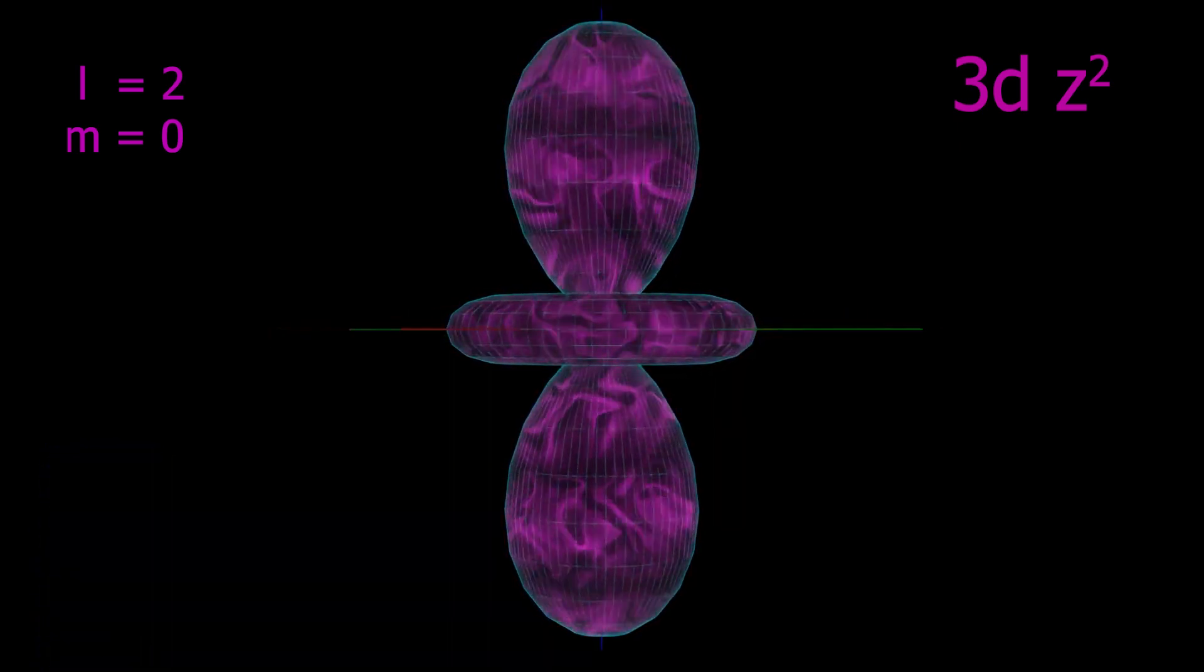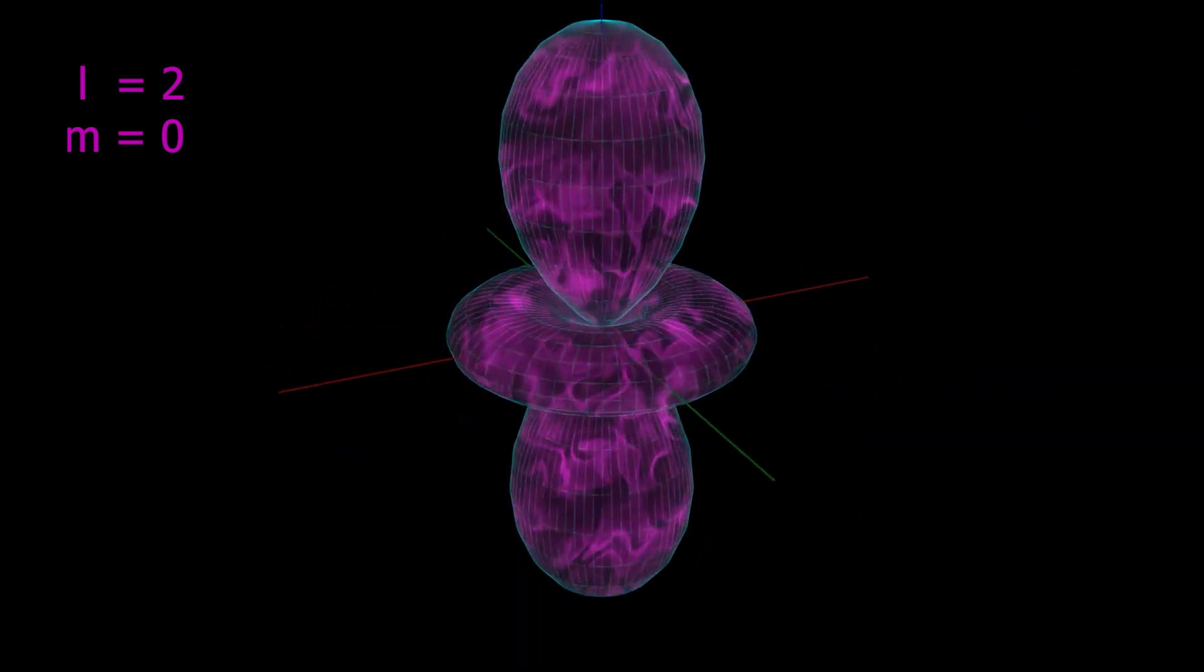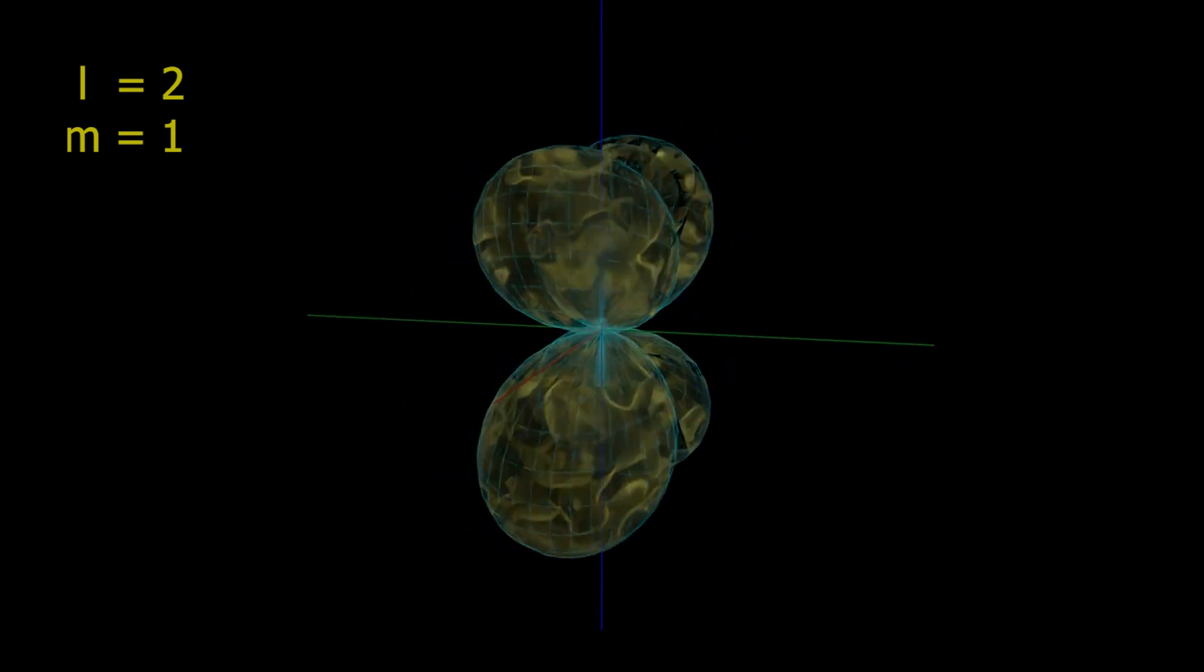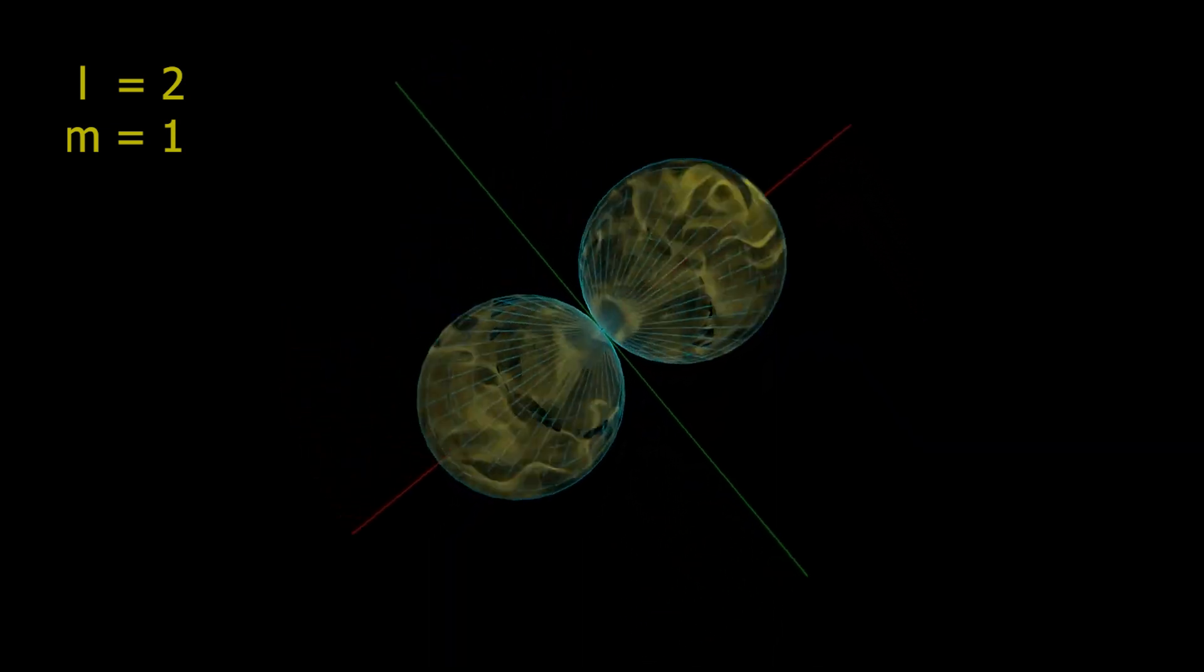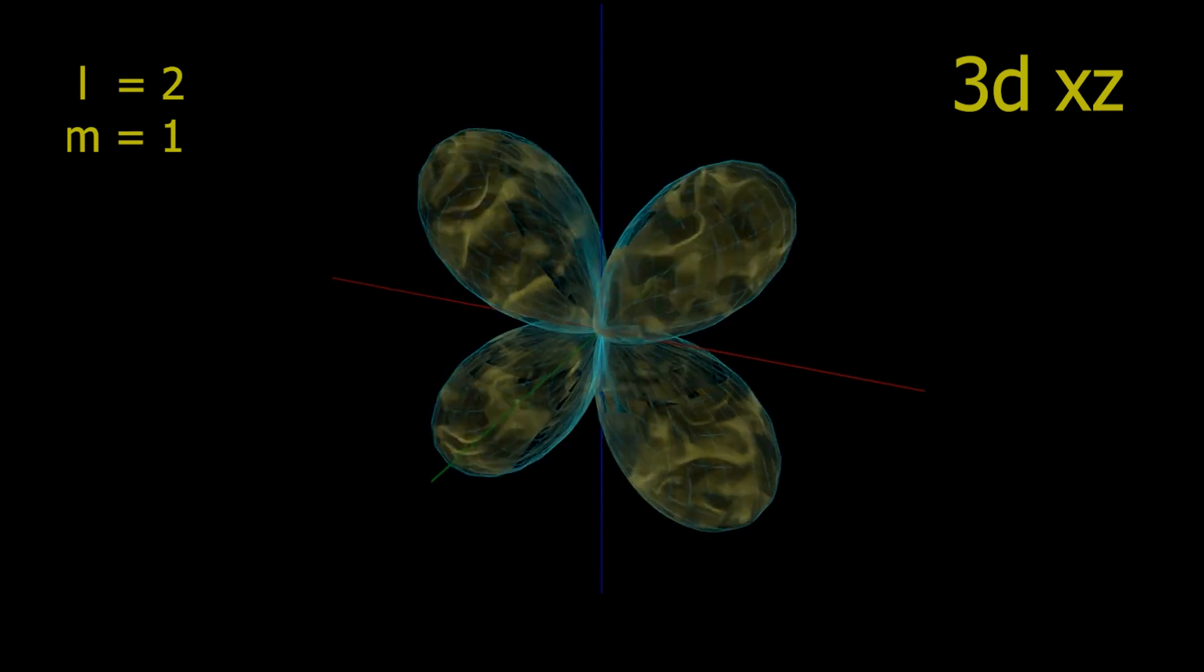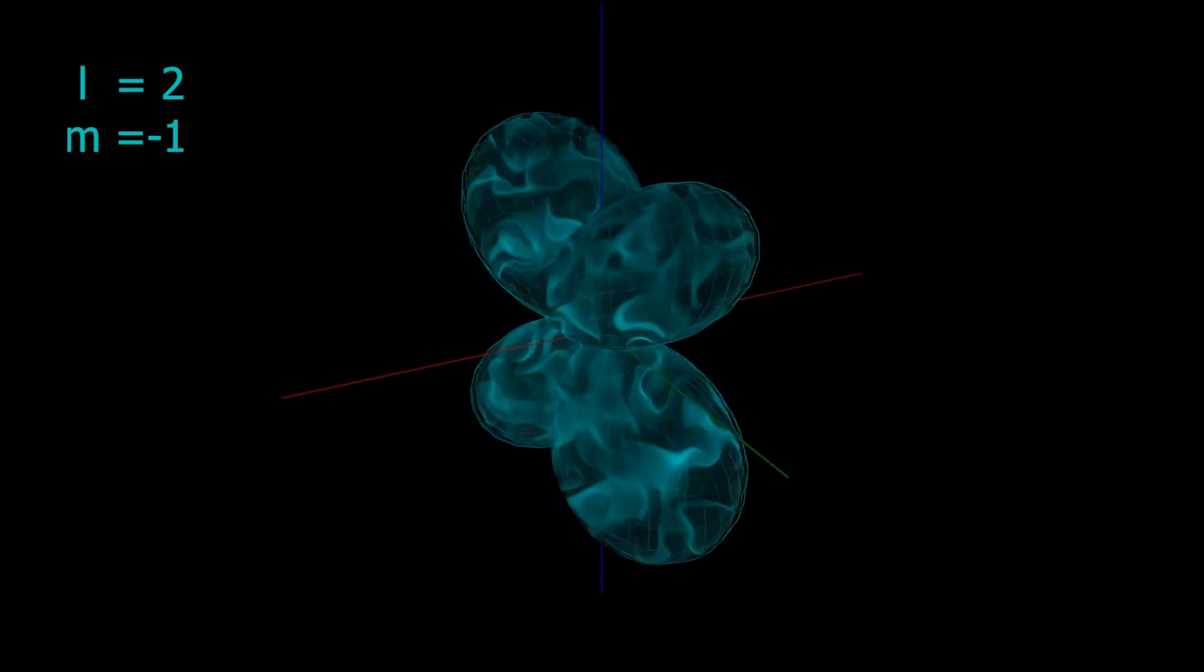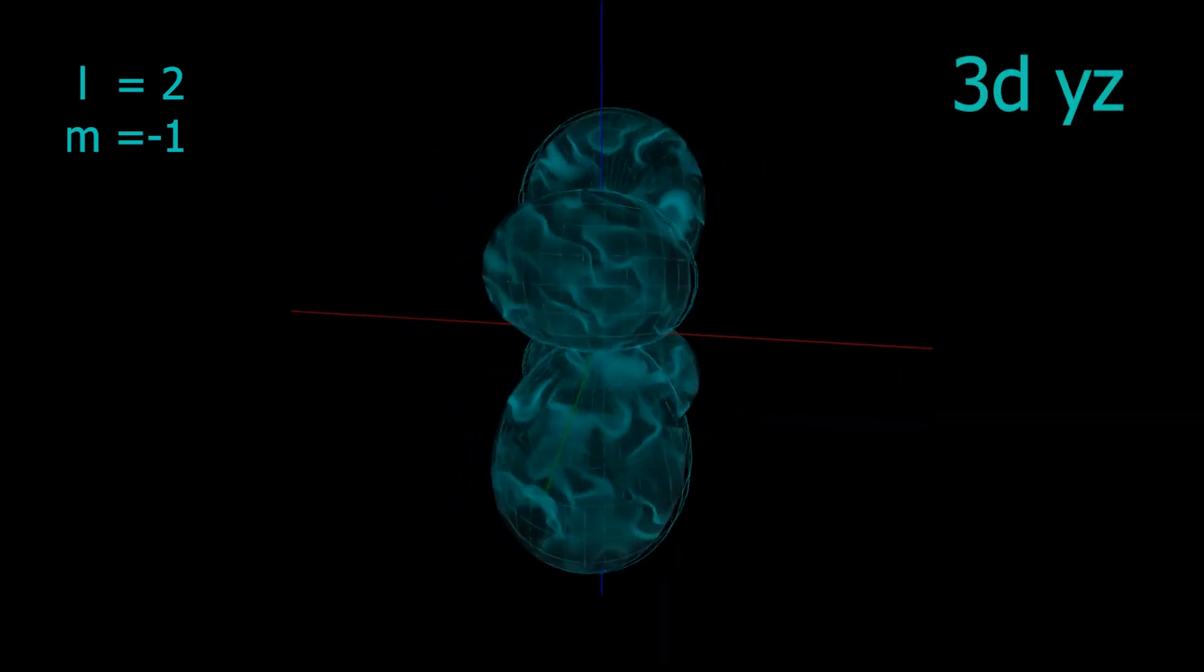Before we continue on with titanium, let's first quickly look through the other 5d orbitals. We started with the magnetic quantum number 0, and we have this elongated dumbbell with a donut. As we shift the magnetic quantum number M equals 1, we see a cloverleaf pattern. And for M equals 1, the petals are aligned in the xz plane, so this is labeled 3dxz. When we shift to a magnetic quantum number M minus 1, we see the same cloverleaf pattern. And for M equals minus 1, the petals are aligned in the yz plane, so this we label 3dyz.